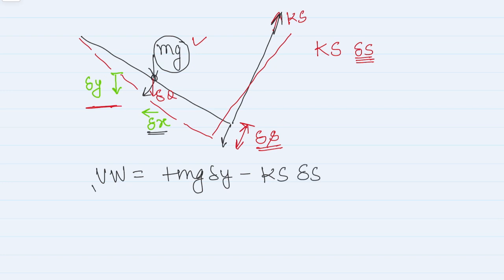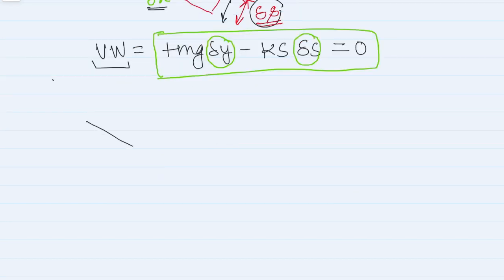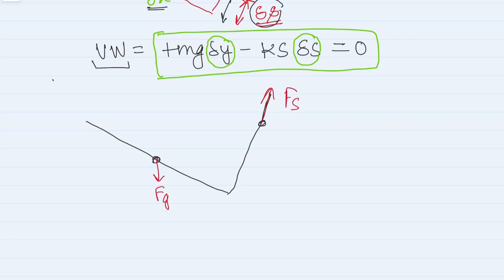Based on the principle of virtual work, the total virtual work equals zero, and this is the governing equation for the problem. The next challenge is to correlate delta y and delta s. We know the displacement is expressed in terms of theta, so these are dependent quantities. I will first define the initial configuration in static equilibrium and then identify where each force acts — the spring force at one point and the gravitational force at the center of mass.